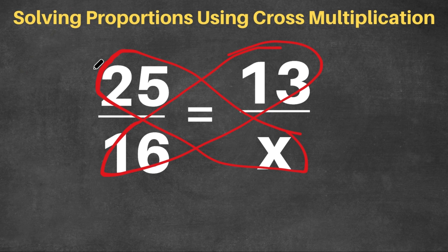So 25 times x, that is 25x. And this equals 16 times 13. You can use a calculator for this. 16 times 13, that's going to get you to 208.